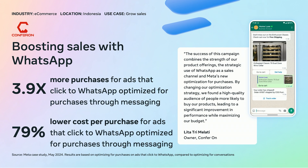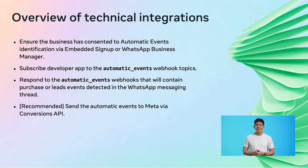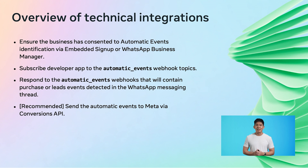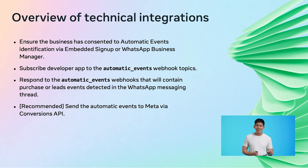Let's dive into how this solution can be implemented. In this section, we will cover the essential steps for integrating the Automatic Events API into business operations. First, it is crucial to ensure that the business has consented to automatic events identification. This can be done via embedded signup or through WhatsApp Manager. Instructing Meta to automatically identify events is a key step to ensure compliance and proper functionality. Next, you will need to subscribe your developer app to the automatic events webhook topic. This subscription allows your app to receive notifications about purchase or lead events automatically identified in WhatsApp messaging threads. Once subscribed, it is important to respond to these webhooks and take actions based on the insights gathered. Finally, we recommend sending the automatic events to Meta via the existing Conversions API for business messaging. From early 2026, this sent event will help track and optimize your marketing efforts, ensuring you make the most out of the data collected.